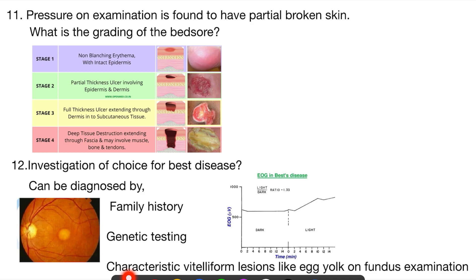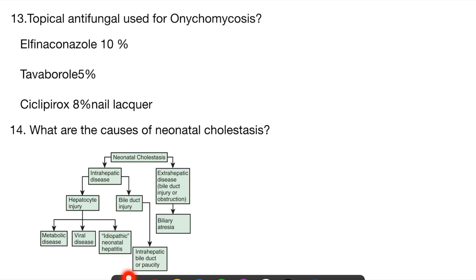Coming to topical antifungal which is used for onychomycosis, here are some of the options that we can have. You have to mark according to this: efinaconazole 10% topical solution, tavaborol 5% topical solution, and ciclopirox 8%, which is available as nail paint.